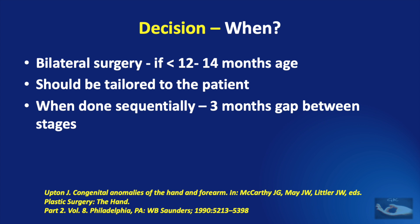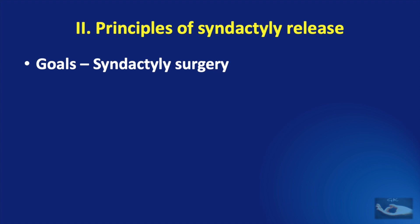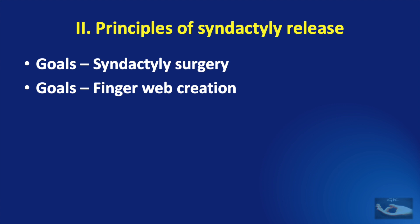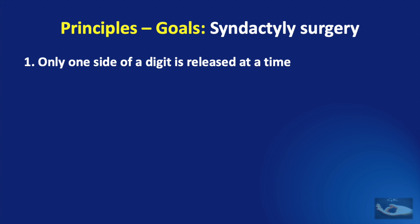It is very important to understand the basic principles of surgery for congenital syndactyly — specifically the goals of syndactyly surgery and the goals of creating a good finger web. As far as syndactyly release is concerned, there are seven basic principles. First, only one side of a digit is to be released at a single time, to avoid any vascular compromise or embarrassment of the finger.